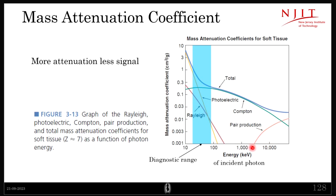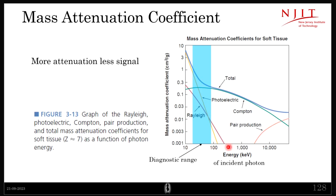On the graph, Compton scattering is shown in green, Rayleigh in red, and photoelectric effect in yellow, with pair production in orange. Pair production does not occur in the diagnostic range and is not usually studied. For soft tissue in the diagnostic range, it is primarily photoelectric effect and Compton scattering that compete, and the graph shows how the total mass attenuation coefficient varies as a function of energy.